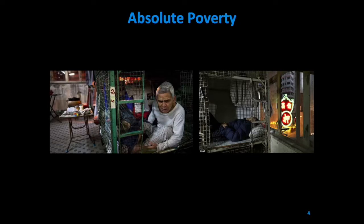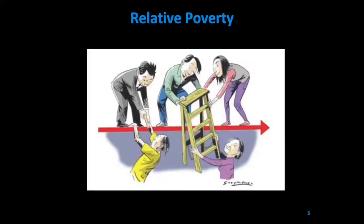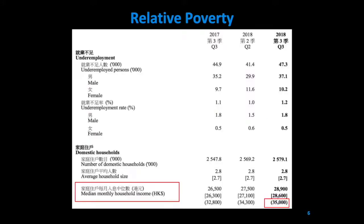These residents are often in absolute poverty due to an exposure to health and safety risks. On the other hand, relative poverty considers deprivation in comparison to other people's standard of living. In 2013, the First Commission on Poverty agreed to have Hong Kong's poverty line based on the concept of relative poverty.